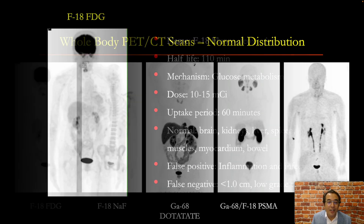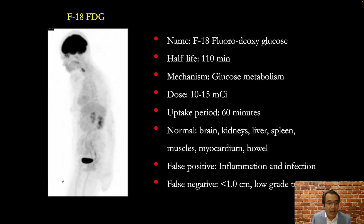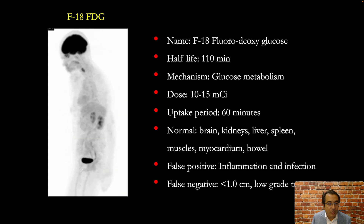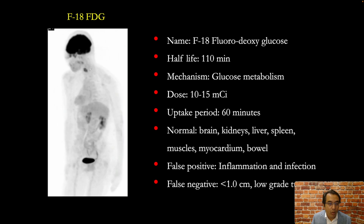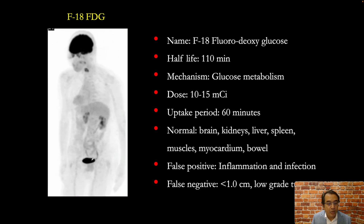Let's get started. This is our first whole body image from a FDG PET-CT scan and we are looking at physiologic distribution of the tracer: intense activity in the brain, some activity in the extraocular muscles, vocal cords, tonsils, faint activity in the liver, spleen, and excretion from the kidneys into the bladder.